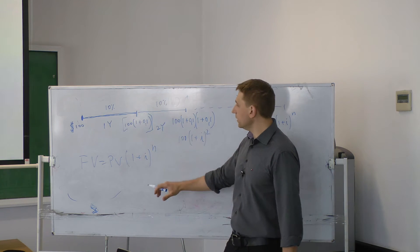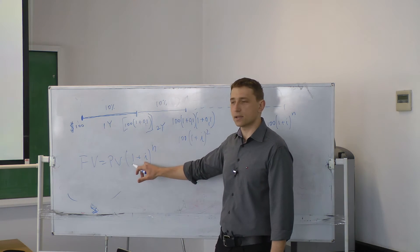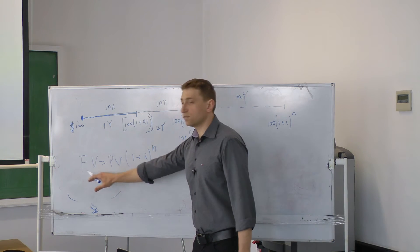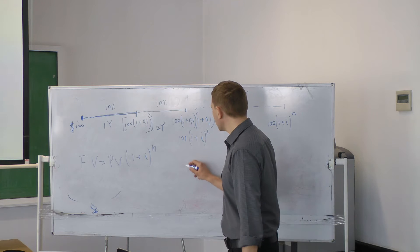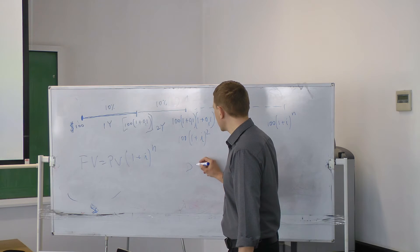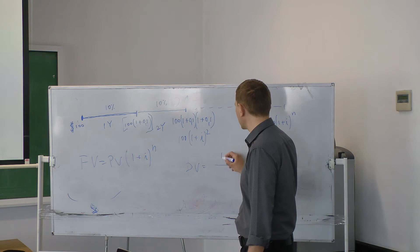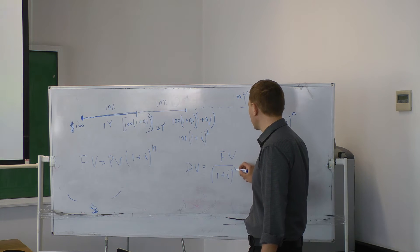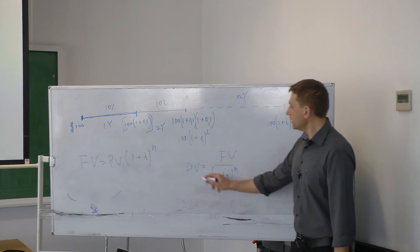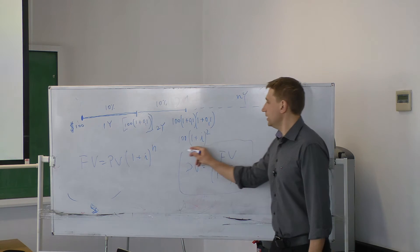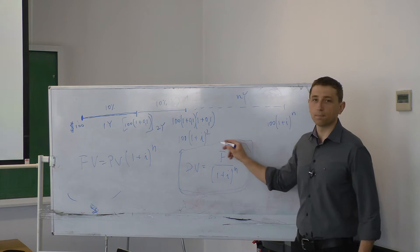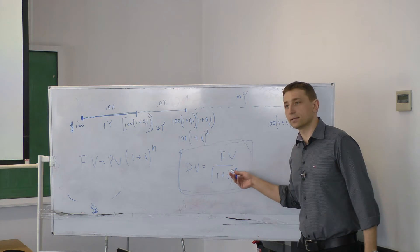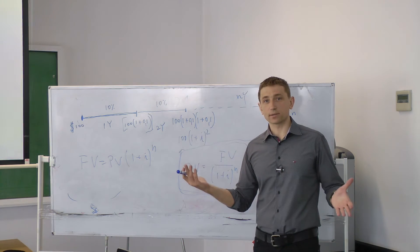Future value equals present value multiplied by (1 + i) to the power of N, where N is the number of years and i is the interest rate. But if I have this nice formula, I can have an even nicer one: present value equals future value divided by (1 + i) to the power of N. And this one is really useful because I can use it to look at investment projects.